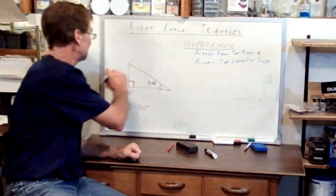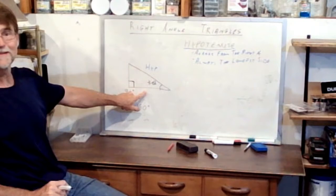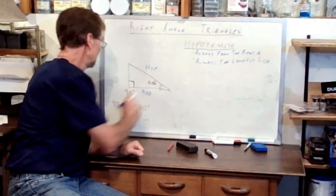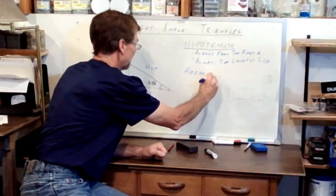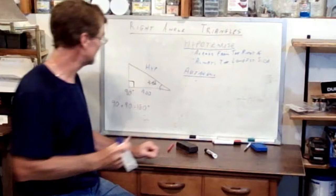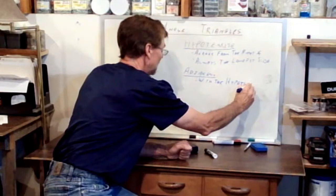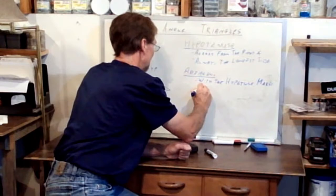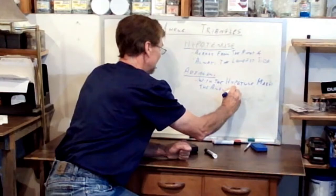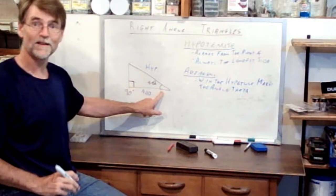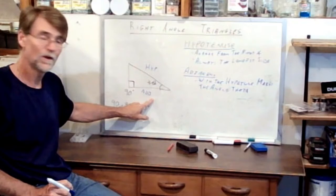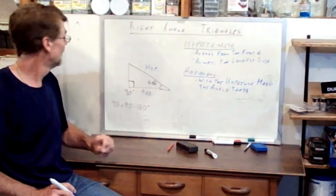The next side is what we call the adjacent. The definition of the adjacent — how do we find it? We say that the adjacent, together with the hypotenuse, makes the angle theta. So the angle theta is created by two lines: the hypotenuse and the line we call the adjacent. The adjacent is adjacent to the angle theta.